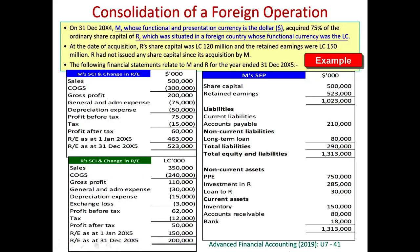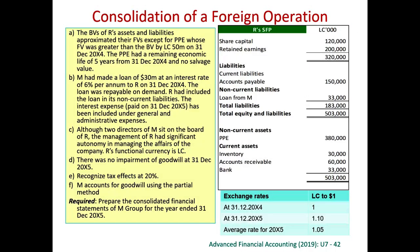We have all the information for M and R. This is M's figures for 2005 in terms of the income statement and statement of retained earnings, and this is for R, and this is M's statement of financial position. Now it is 31st of December 2005. The question says that the book value of R's assets and liabilities approximated their fair value, except for PPE.